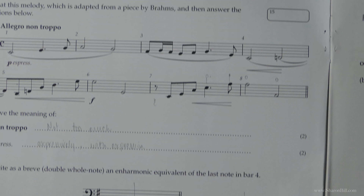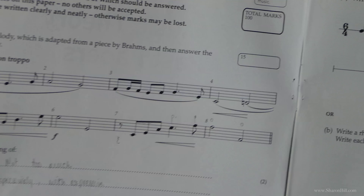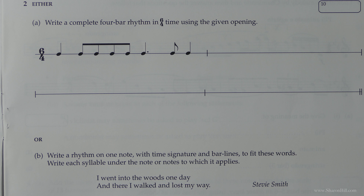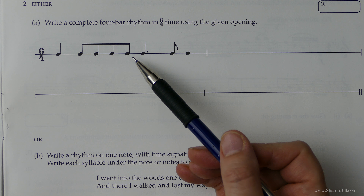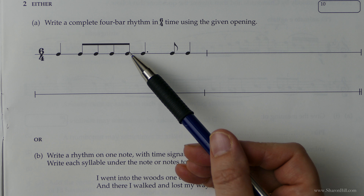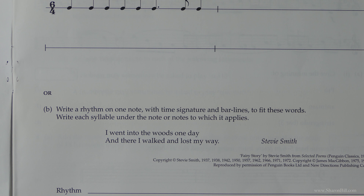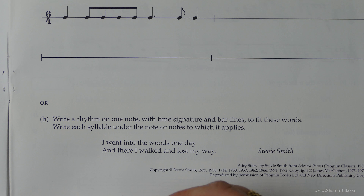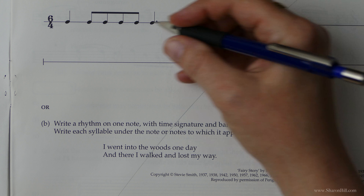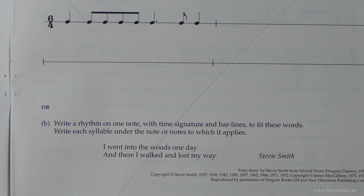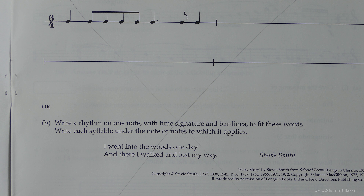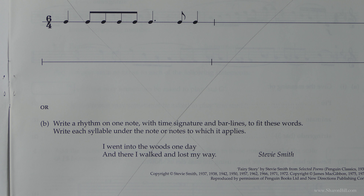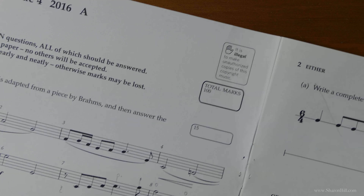Let's move on to the next page. In the new 2018 onwards exam papers, there will not be a question asking us to write a four-bar rhythm or to write a rhythm to words. None of that will be on the paper — it's in your old theory and practice workbooks, and it's still of benefit to have a go at a few, but it isn't on the exam paper. So we can skip this page and move straight on.